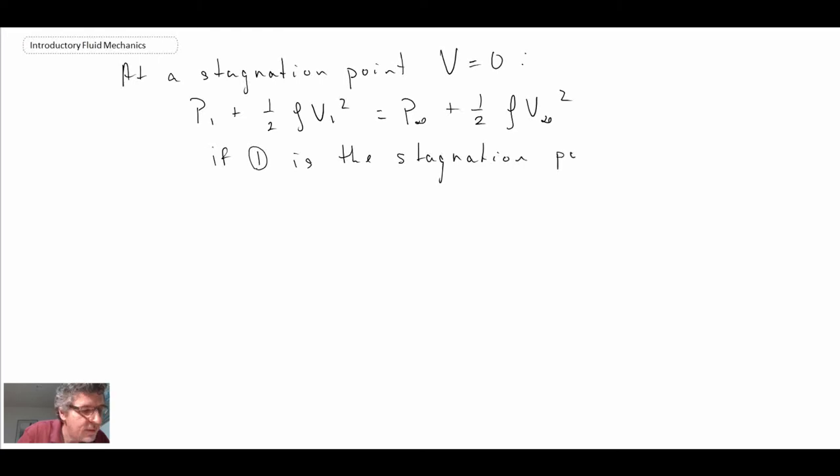If you recall, at a stagnation point, we had V equals zero. With that, Bernoulli's equation, if you're following a streamline, so let's assume one is the stagnation point. With that, we can say P₁ is P₀ for the stagnation pressure. V₁ is equal to zero, and with that, we get on the left-hand side P₀, and on the right-hand side, we have P∞ plus one-half ρV∞².